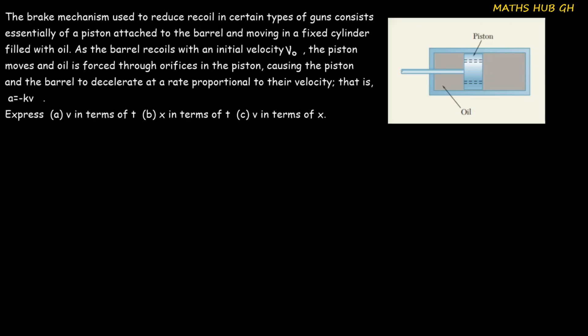That is, a equals minus kv. Express: (a) v in terms of t, (b) x in terms of t, and (c) v in terms of x.